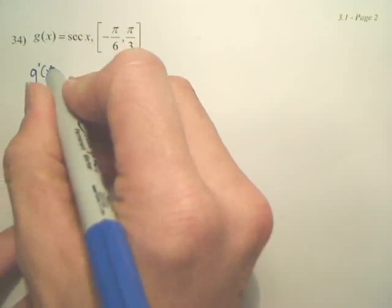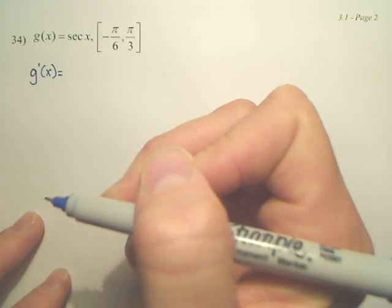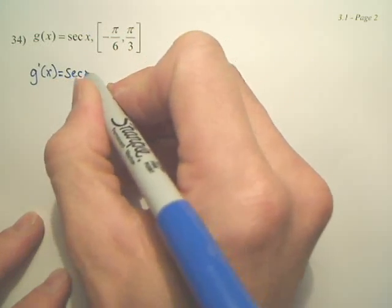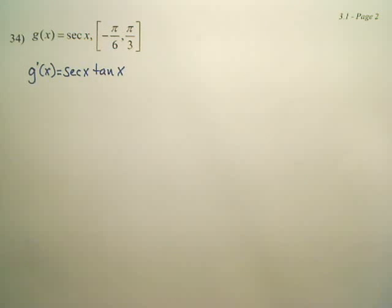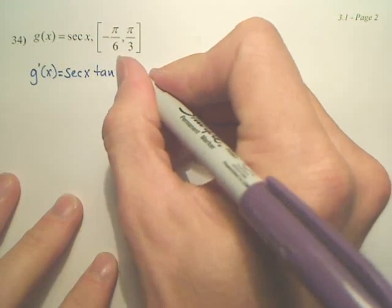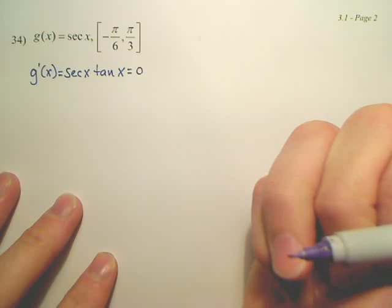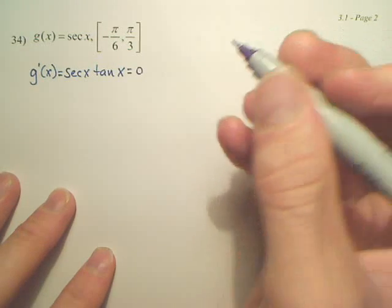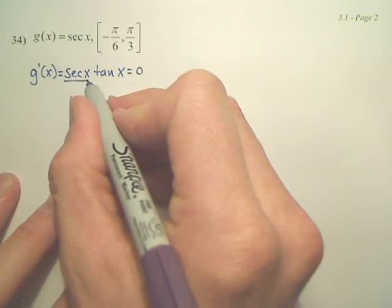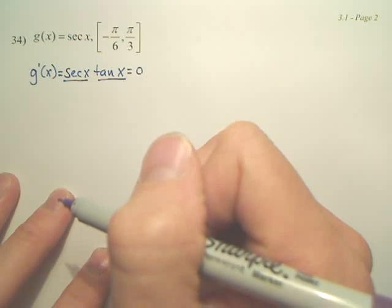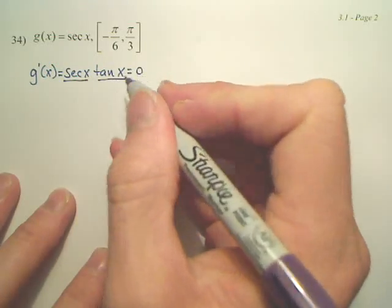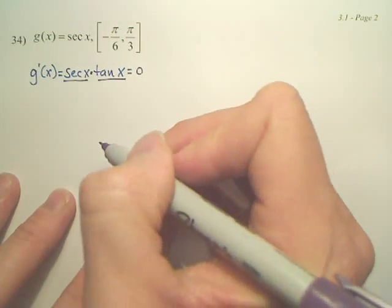g prime of x is secant x tangent x. Now we have to set that equal to zero, because you set the derivative equal to zero to find critical numbers. You understand here you have something called the zero product property — you basically set each piece equal to zero, because it's multiplied.